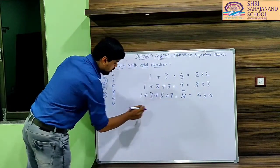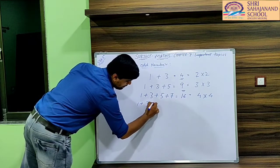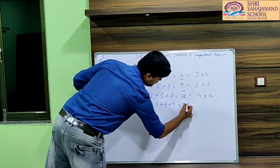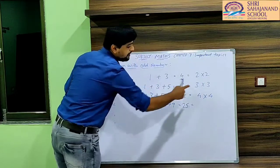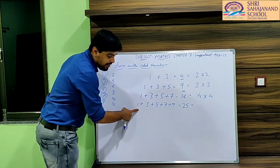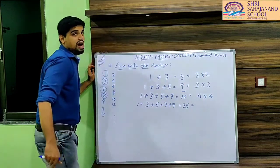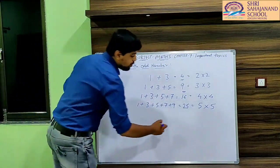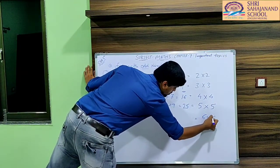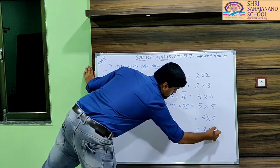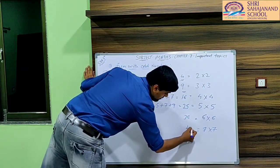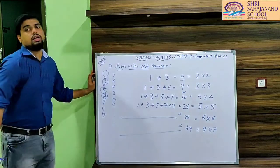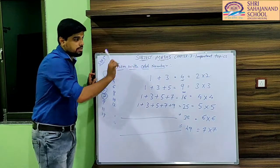The next odd number is 9. So 1 plus 3 plus 5 plus 7 plus 9 equals 25. How many odd numbers are there? 1, 2, 3, 4, 5. So I have to multiply 5 with 5, which gives 25. And for your homework, you have to write what will come for 6 × 6 (which is 36) and 7 × 7 (which is 49), by continuing the pattern of adding the next odd numbers.